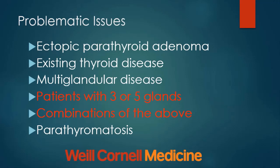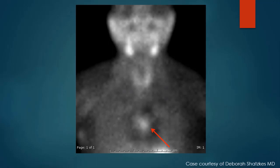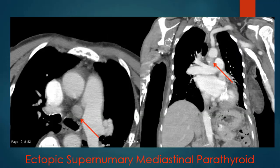We can also have combinations of abnormalities — patients who have less than four or more than four glands, ectopic tissue, and existing thyroid disease. This is a 59-year-old patient with secondary hyperparathyroidism who had previously undergone a neck dissection where three-and-a-half glands were resected. Parathyroid levels remained elevated and she had significant bone disease requiring hip replacement. On the sestamibi examination, there is increased activity in the mediastinum, and on subsequent CT, a large lesion was surgically proven as an ectopic supernumerary mediastinal parathyroid adenoma.